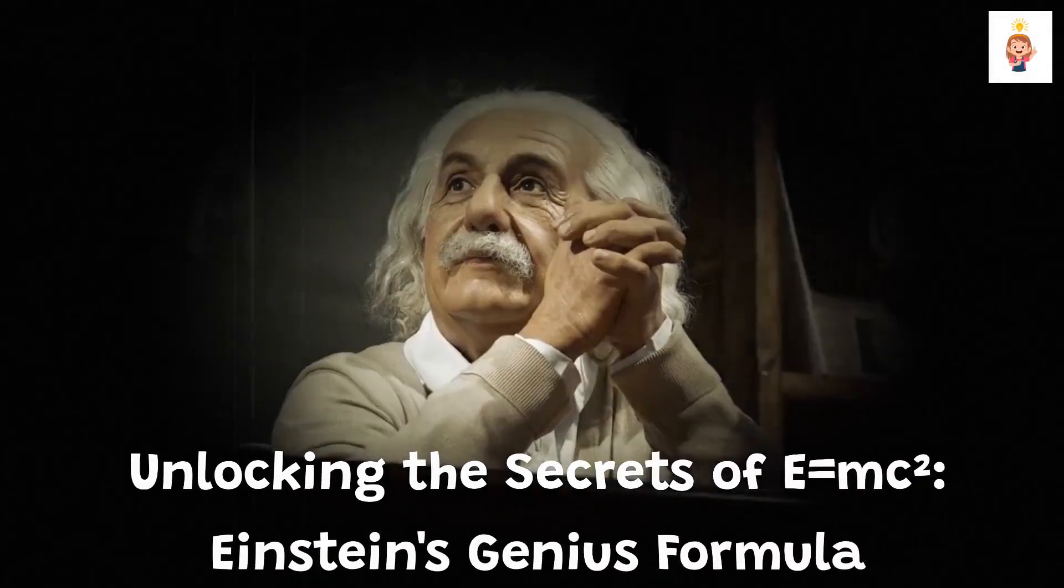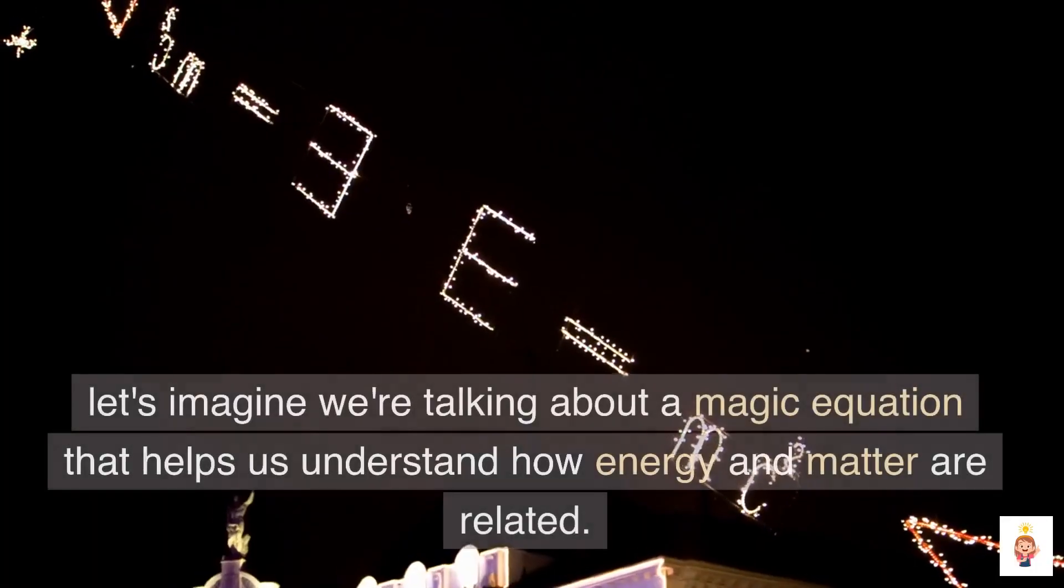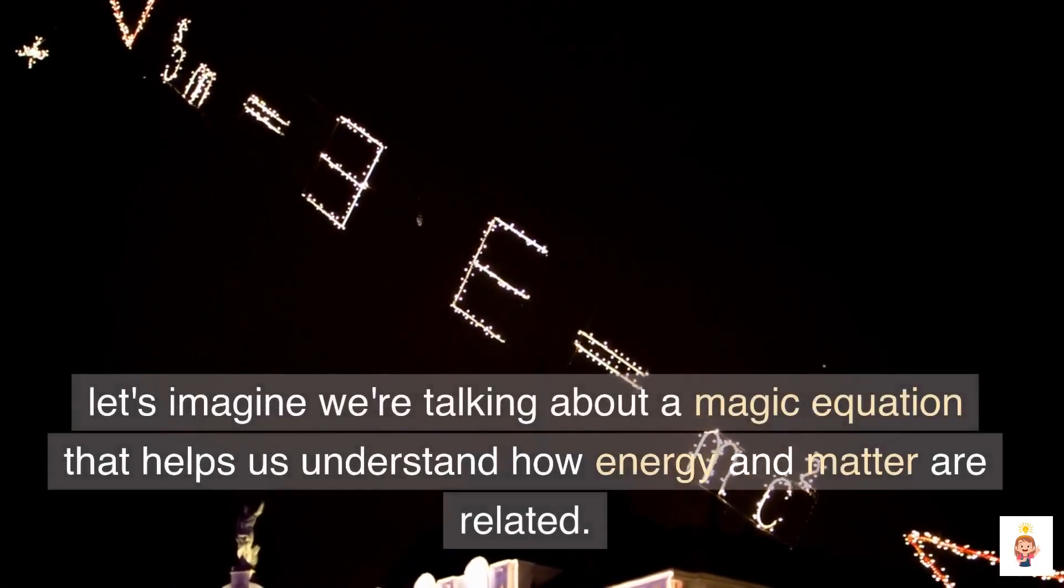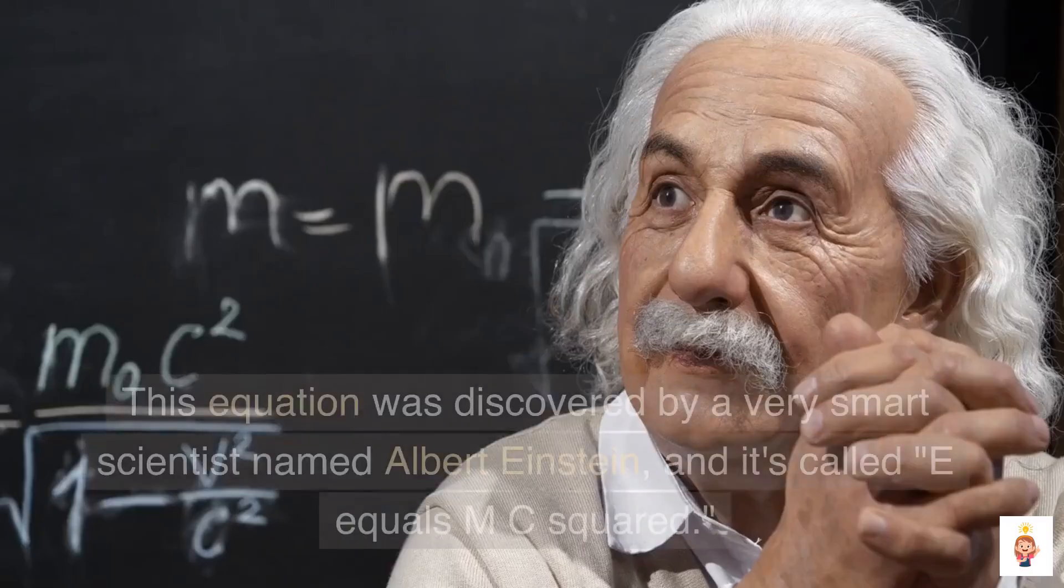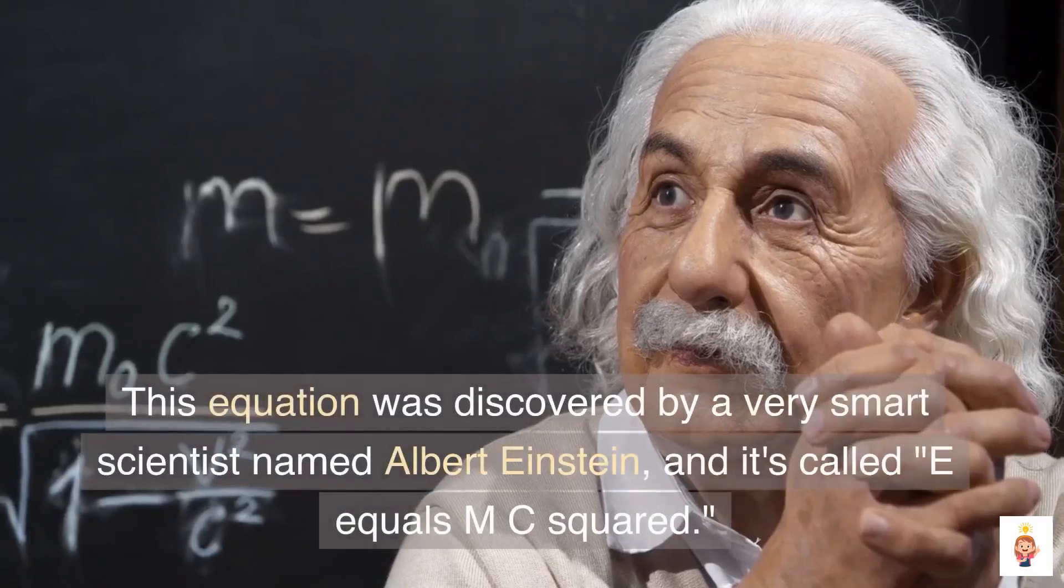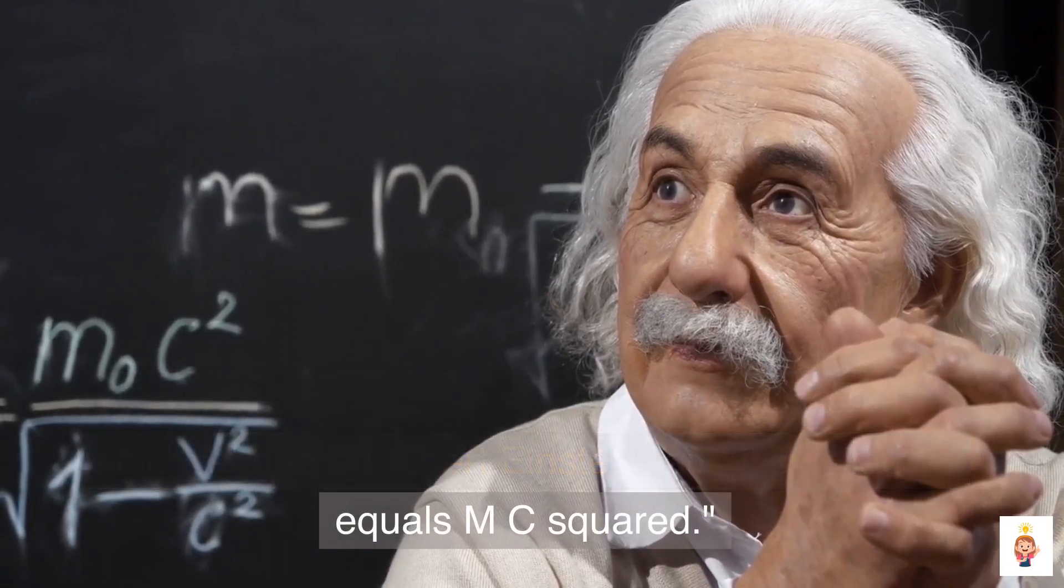Unlocking the Secrets of E equals MC squared, Einstein's Genius Formula. Let's imagine we're talking about a magic equation that helps us understand how energy and matter are related. This equation was discovered by a very smart scientist named Albert Einstein, and it's called E equals MC squared.